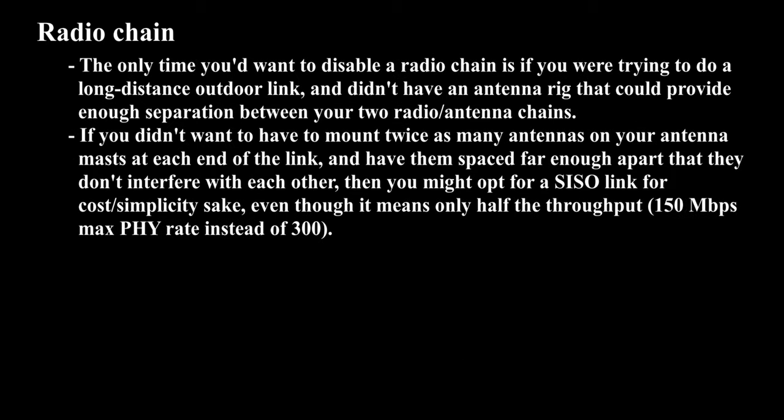The only time you'd want to disable a radio chain is if you were trying to do a long-distance outdoor link and didn't have an antenna rig that could provide enough separation between your two radio or antenna chains. If you didn't want to mount twice as many antennas on your antenna mast at each end of the link, and have them spaced far enough apart that they don't interfere with each other, then you might opt for a SISO link for cost or simplicity's sake, even though it means only half the throughput — 150 Mbps max PHY rate instead of 300.